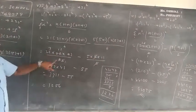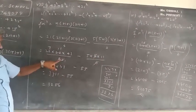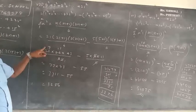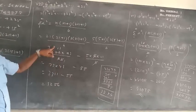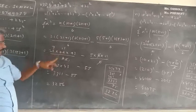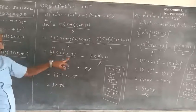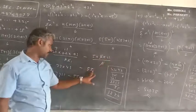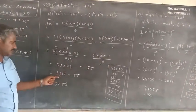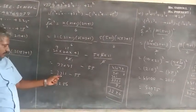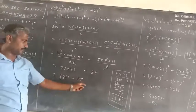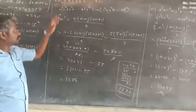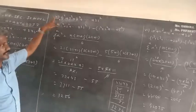So cancel the 6. 21 into 22 gives 7 into 11 is 77, into 43. Minus 5 into 11 is 55. So 3311 minus 55. So the answer is 3256. This is the very important final question.